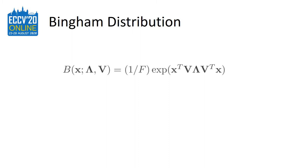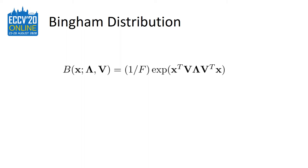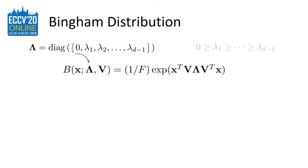The Bingham distribution is an antipodally symmetric distribution, and its probability density function is given as follows. Here, X represents a quaternion for which we compute its probability density. The matrix V represents our orientation matrix, which we build from the estimated quaternion of our model, and F is a normalization constant. The matrix lambda is called the concentration matrix and is constructed in a sorted fashion. In this work, we use its parameters as an indication of the spread of the Bingham distribution.